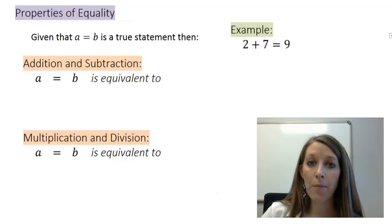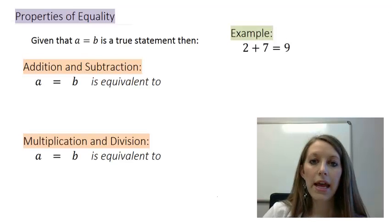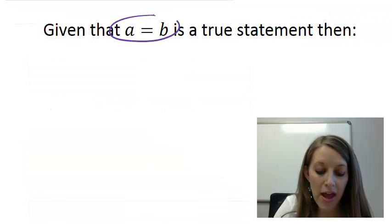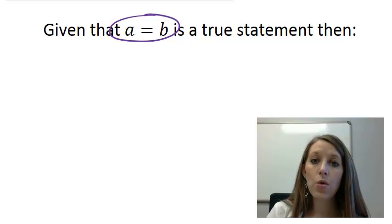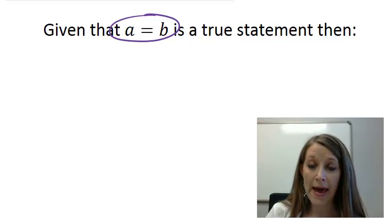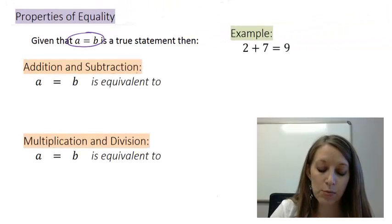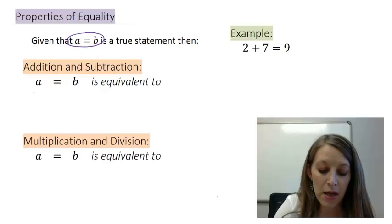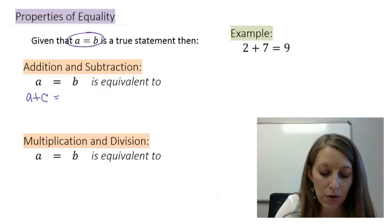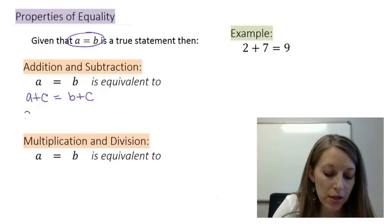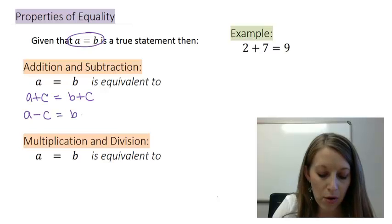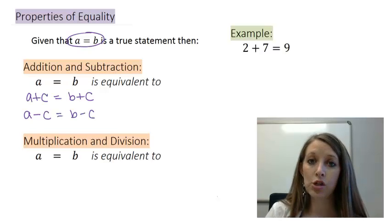And these are called the properties of equality. It starts out by saying if we have a true equation, then we can manipulate this equation by using our typical operations as long as you do it to both sides simultaneously. So in the addition and subtraction property of this equality, we can change this equation a equals b into adding something to both sides, and that remains a true equation, or into subtracting something from both sides, and that also remains a true equation.